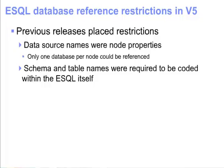In previous releases of WebSphere Message Broker, the data source name was a node property. This results in the restriction that only one database could be referenced per node. Also, the schema name and table names were required to be hard-coded within the ESQL. Although expression statements were allowed in ESQL, expressions could not be used in database references.